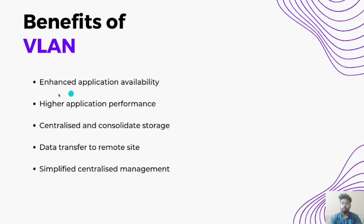The benefits that VMs get from VSAN include: enhanced availability of VMs for applications, higher application performance, and no downtime since the data is stored in a very large storage area network with many backups available — even if one server goes down, other servers are available to provide users access to the data. Additionally, it offers centralized and consolidated storage, allowing different combinations of secondary storage devices like floppy disks and others. Data can also be easily transferred to remote sites, and it provides a simplified way to manage data centrally — which is why companies today are opting for virtualized storage area networks.